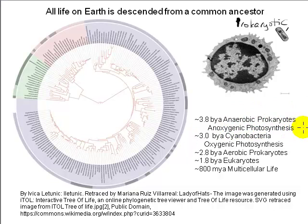It's thought that around 3.5 billion years ago, the innovation of capturing and using sunlight energy arose. Initially, this earliest photosynthesis utilized electron donors such as hydrogen sulfide rather than water, and so did not produce molecular oxygen — it's referred to as anoxygenic photosynthesis.